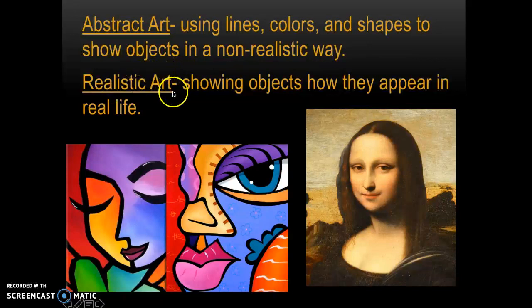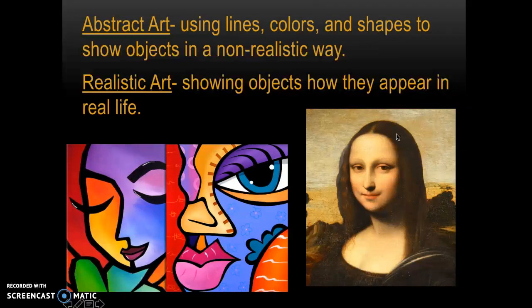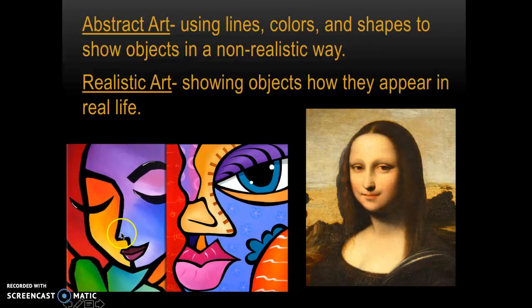Realistic art is showing objects how they really appear in real life. Looking at these two works of art versus this work of art, we know that the Mona Lisa is very realistic — she was painted by a realistic artist who was trying to show a style that mimics real life, almost like a photograph. These two works of art are more abstract. We can still tell that these are people, but the colors, lines, shapes, and patterns are a little bit different from real life.